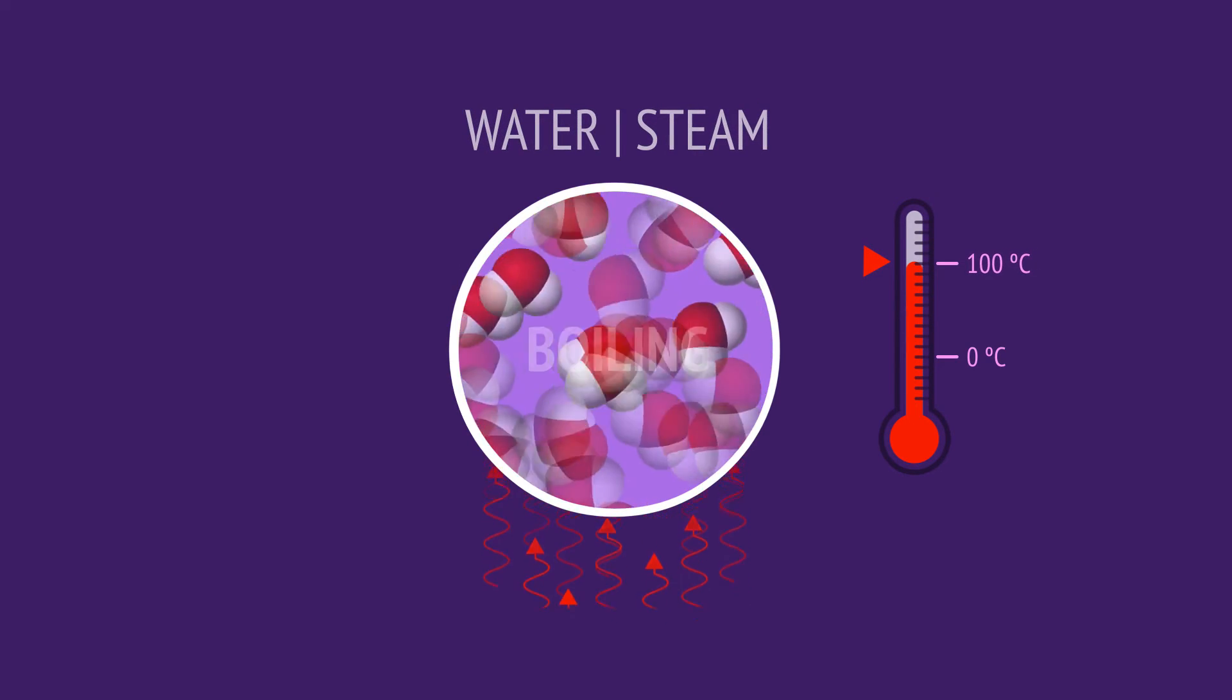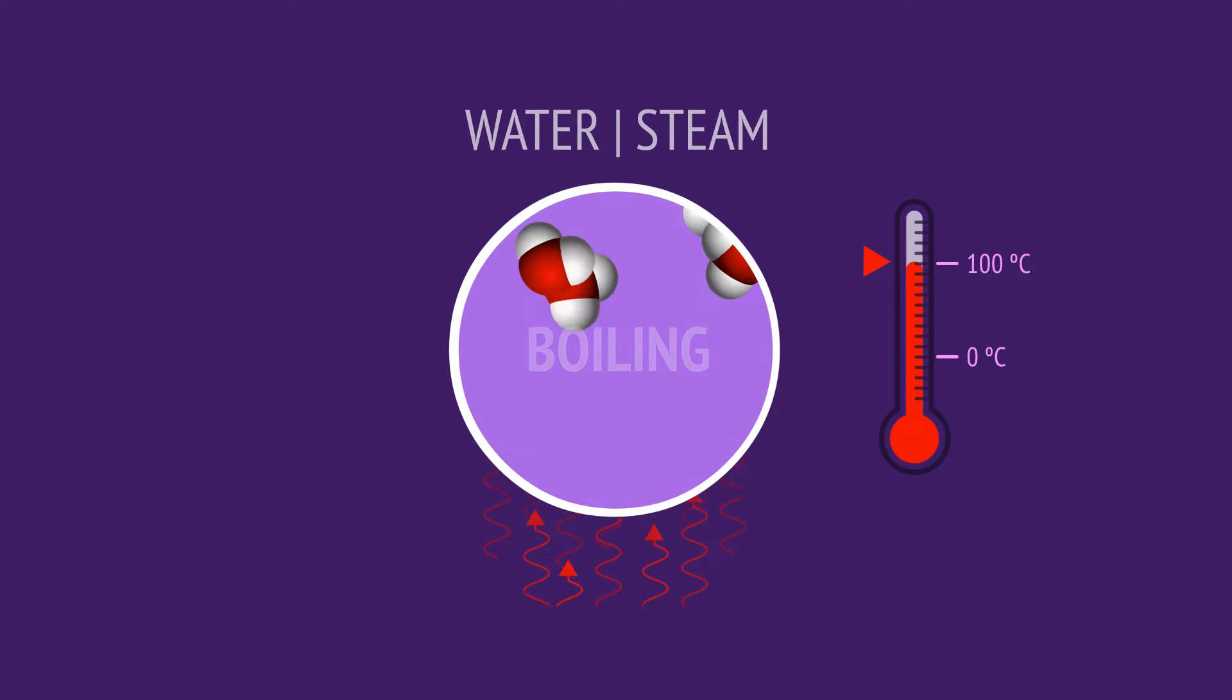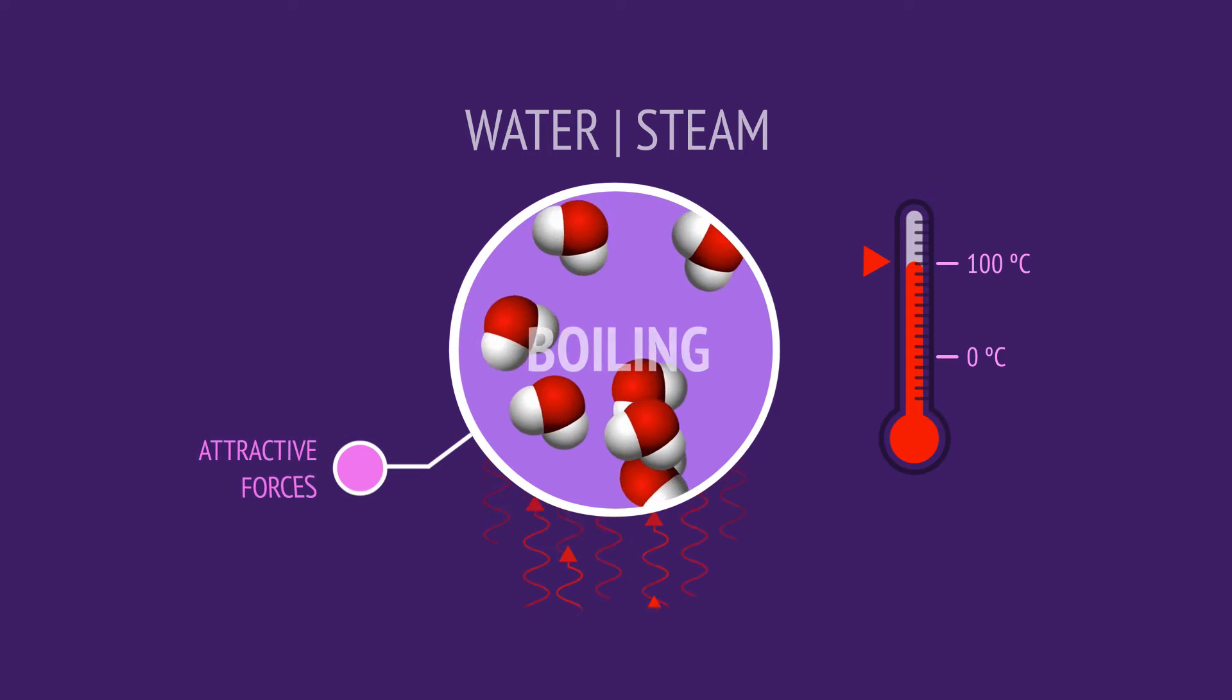At 100 degrees Celsius, the water boils as the molecules have gained sufficient energy to break free. During boiling, the temperature remains constant because heat is used to overcome the hydrogen bonds instead of speeding up the molecules.